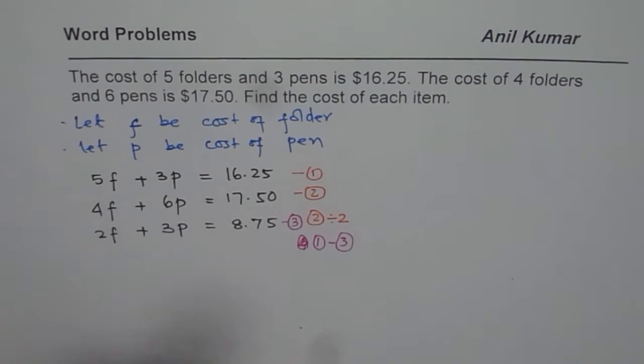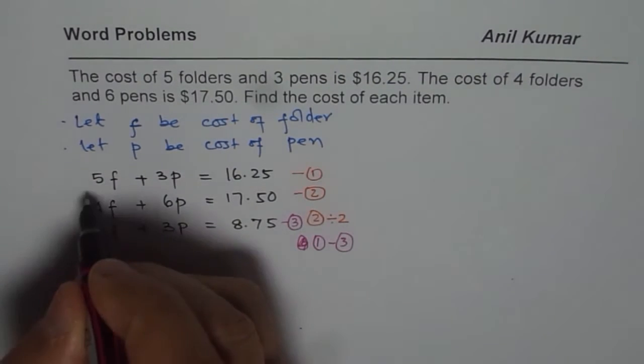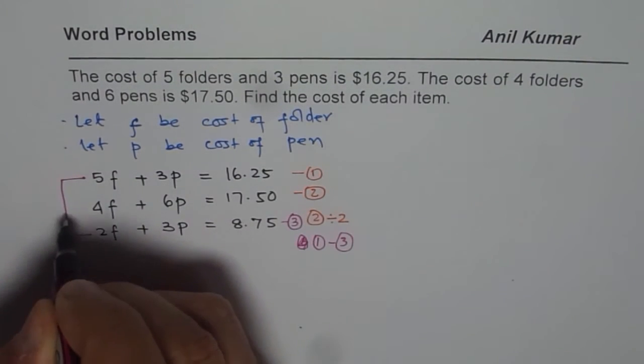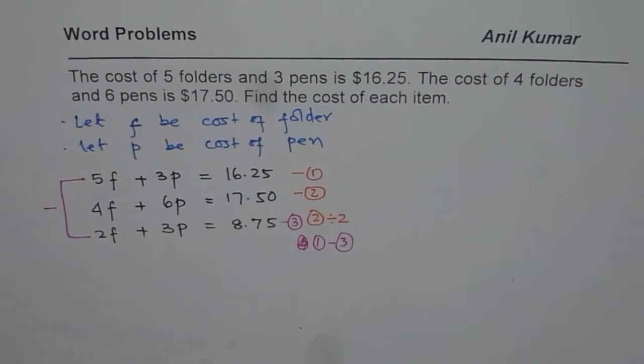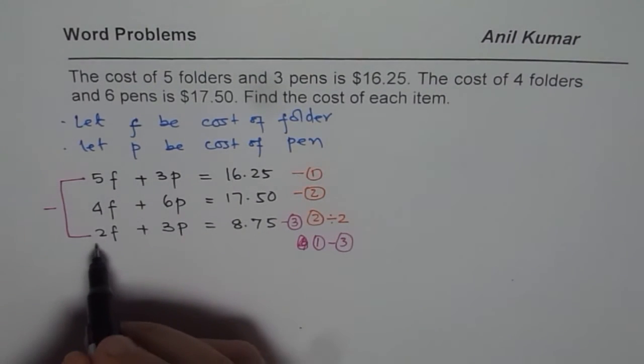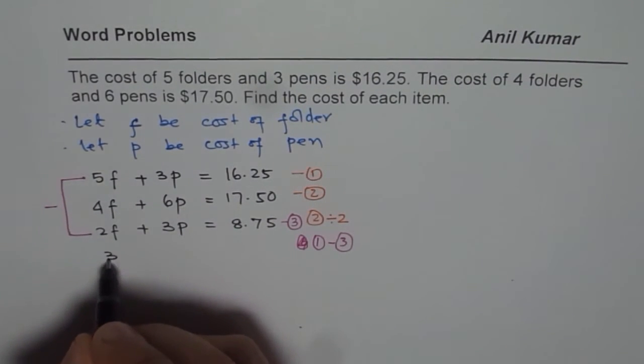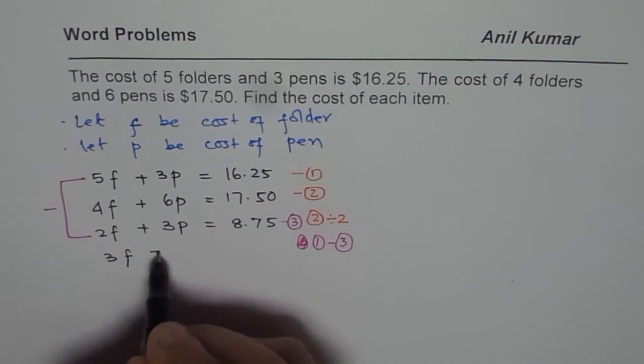So 5, so we are doing difference of these two equations. That is what we are doing. We are doing difference of these two. So we get 5 take away 2 as 3F. 3 take away 3 is 0.